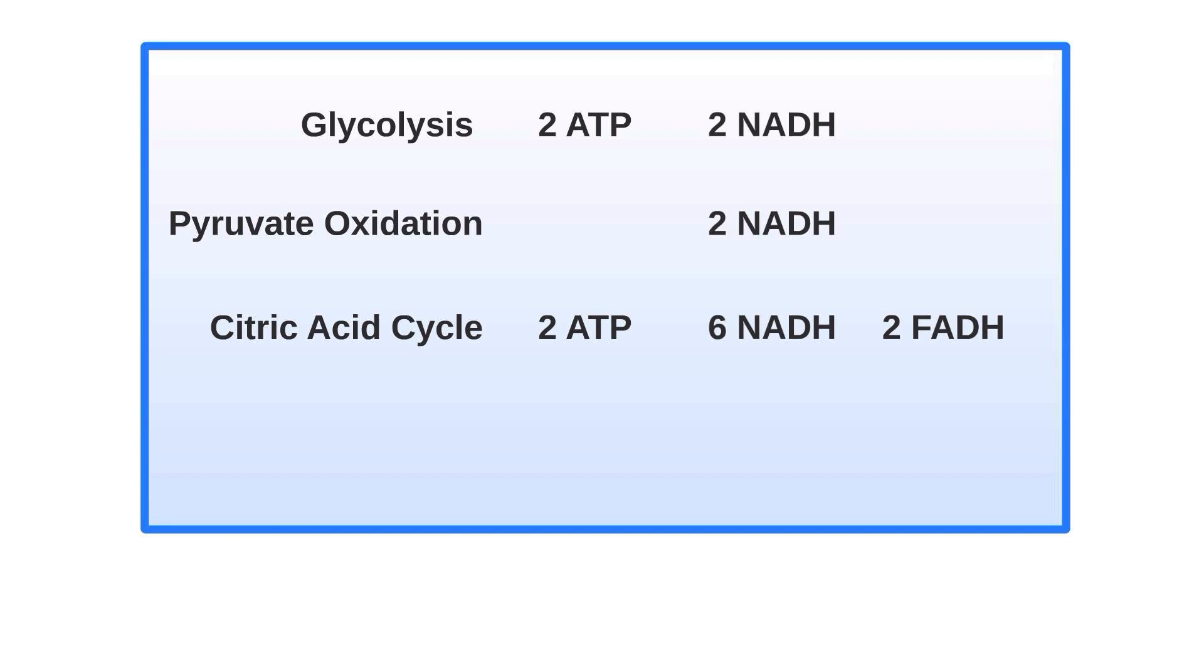We discussed that each NADH produces 3 ATP and each FADH produces 2 ATP. So you would think, if we do some math here, 10 times 3 equals 30 and 2 times 2 equals 4. So we would have 34 ATP produced from the ETC and oxidative phosphorylation. However, this is incorrect. The question is why?